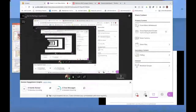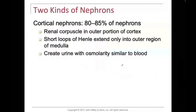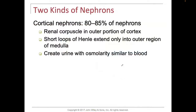Now that we've laid out a lot of the foundational terms, especially with the nephron and the afferent and efferent arterioles, the glomerulus and Bowman's capsule, proximal convoluted tubule, loop of Henle, distal convoluted tubule, and collecting ducts — now that you have some of those foundational terms, the nephrons exist in both the renal cortex and the renal medulla.